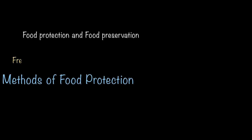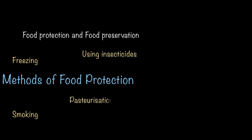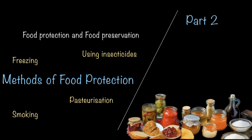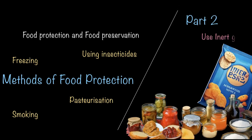In Part 1 of food protection and food preservation, we saw what food protection is and what food preservation is. We also saw some methods of food protection like freezing, smoking, using insecticides, and pasteurization. Now in this video, Part 2, we'll be discussing the use of inert gas, radiation, and some methods of food preservation.